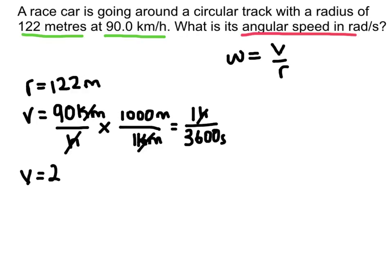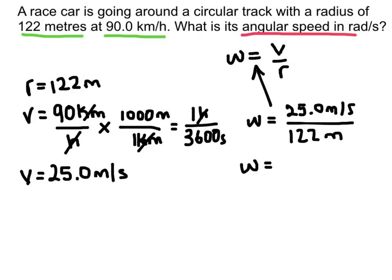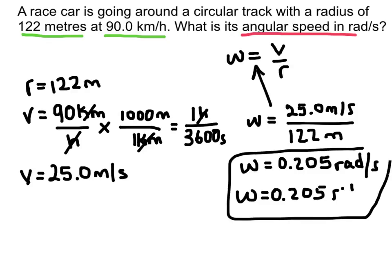And so our velocity in SI units will be 25 meters per second. So let's go ahead and plug these things into our equation here. And so we end up with an angular speed of 0.205 radians per second. And we could also say that's just per second because we don't necessarily need to include the radians part. Either one is acceptable.